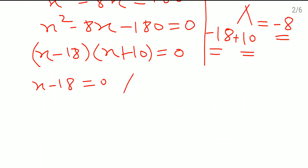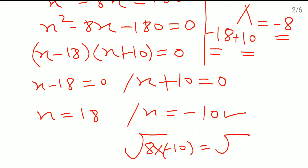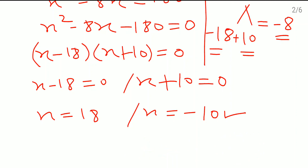So, x minus 18 equals 0 gives x equal to 18, and x plus 10 equals 0 gives x equal to minus 10. If we take x equal to minus 10, the smaller number would be the square root of 8 times minus 10, which gives the square root of minus 80. Since there is a negative sign inside the square root, that is not a real number — it is an imaginary number. So x equal to minus 10 is invalid for our problem.